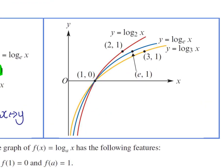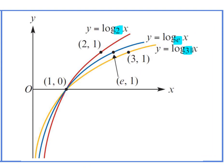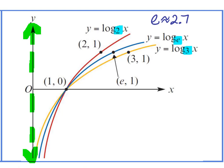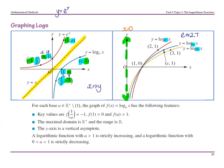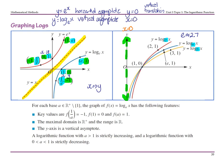Looking at the log graph, you can see log base e is between log base 2 and log base 3, remembering that e is approximately 2.7 — so that makes sense. We have our vertical asymptote, and for a graph that has no horizontal translation it is at x equals zero. Going back to y equals e to the x, that has a horizontal asymptote at y equals zero, impacted by vertical translation. So for log base e of x, it has a vertical asymptote at x equals zero — x and y's are swapping.